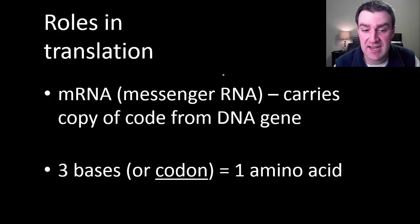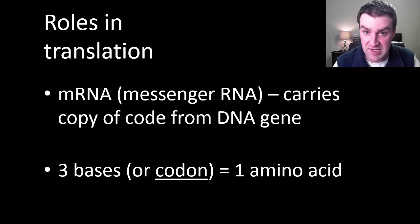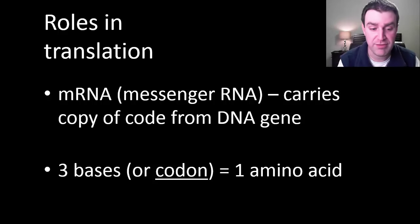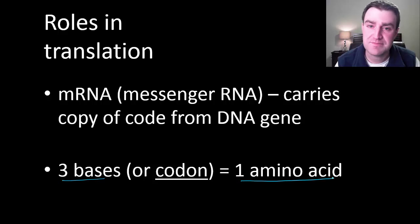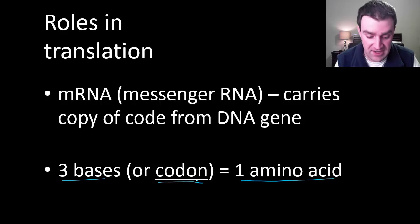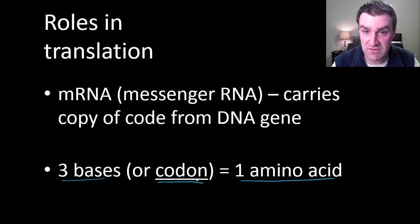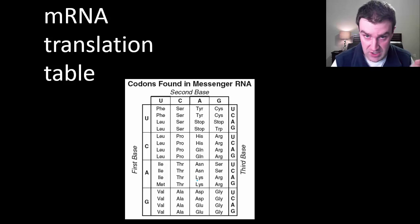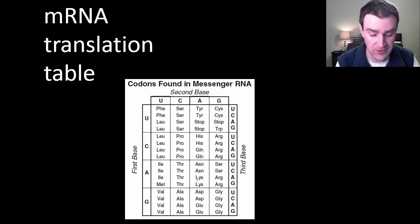mRNA's job is to actually carry the copy of the code, and the code is translated when three nitrogen bases get translated as one amino acid. We have a name for each group of three — we call a group of three a codon, and it's mRNA that carries the code so it has the codons. We'll eventually give you a chart to be able to read RNA code and know which amino acids it's asking for.